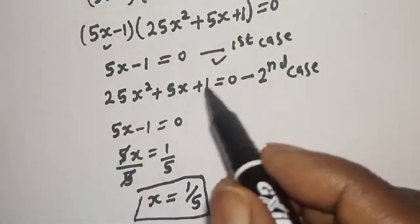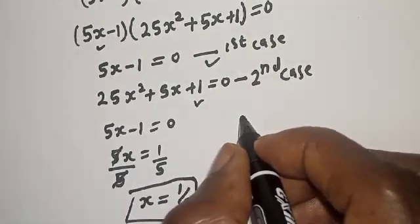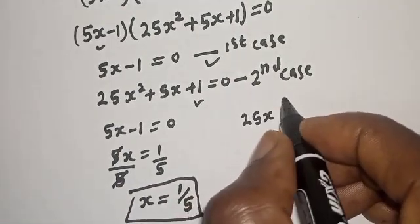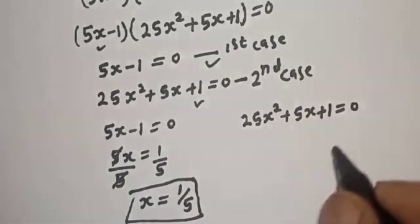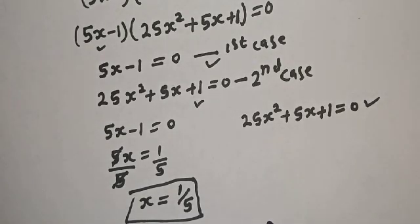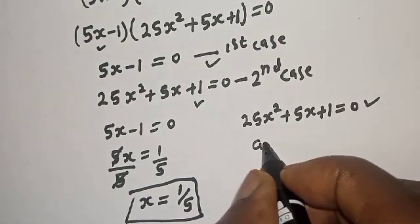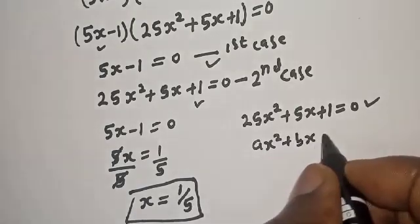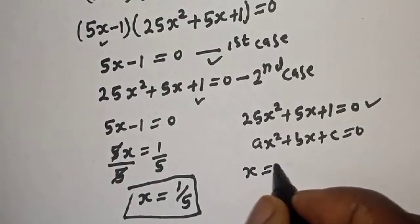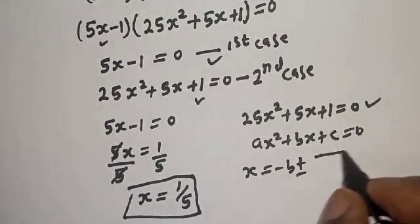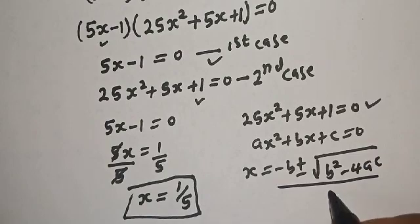Now let's consider the second case. From the second case we have 25s² plus 5s plus 1 is equal to 0. This is a quadratic equation which can be solved using the quadratic general formula: as² plus bs plus c equals 0 gives s equal to minus b plus or minus square root of b² minus 4ac, all over 2a.